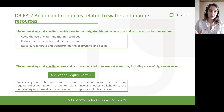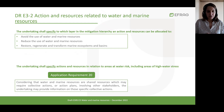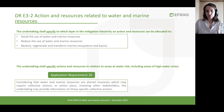The undertaking should specify to which layer in the mitigation hierarchy an action and resources can be allocated: first, avoid the use of marine resources and decrease as much as possible; second, reduce the use of water and marine resources; and third, restore, regenerate and transform marine ecosystems and basins. The undertaking should also specify actions in relation to areas at water risk, including areas of high water stress. Importantly, water and marine resources are shared resources and may often require collective action, so undertakings are invited to provide information on those specific collective actions implemented.